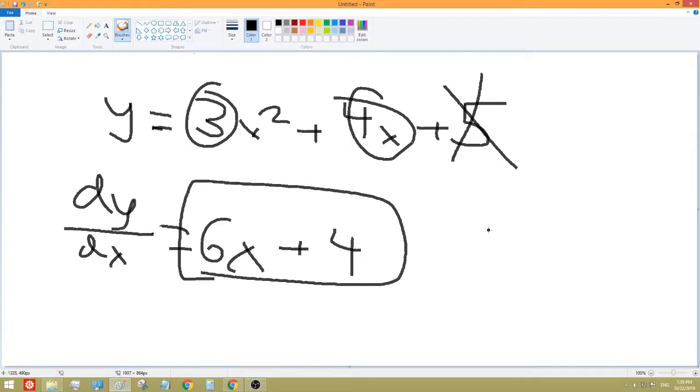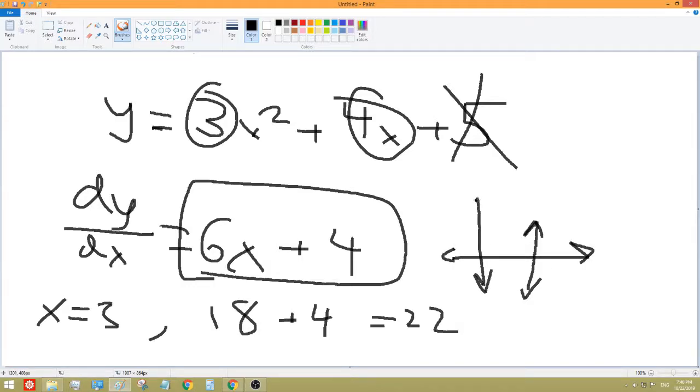Now what's important to note about this is that this is not the actual derivative, you have to plug in X, like some value for X to actually know what the derivative is. For example, let's say you're trying to find X at 3, you have to plug in 3 for X and you get 18, which is X times 3 plus 4 equals 22. So that's the derivative, the slope 22.